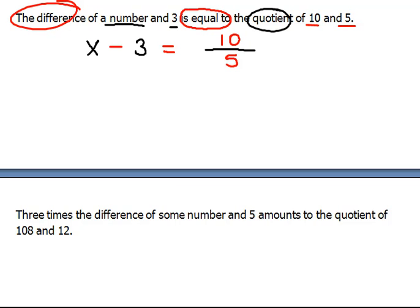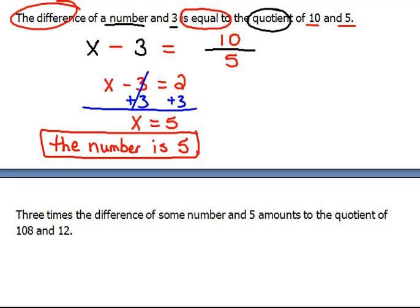We just have to go through and simplify. So, we have x - 3 = 10/5, which is 2. When we add three to both sides, we get x = 5. And that means the number, or our unknown amount, is 5.